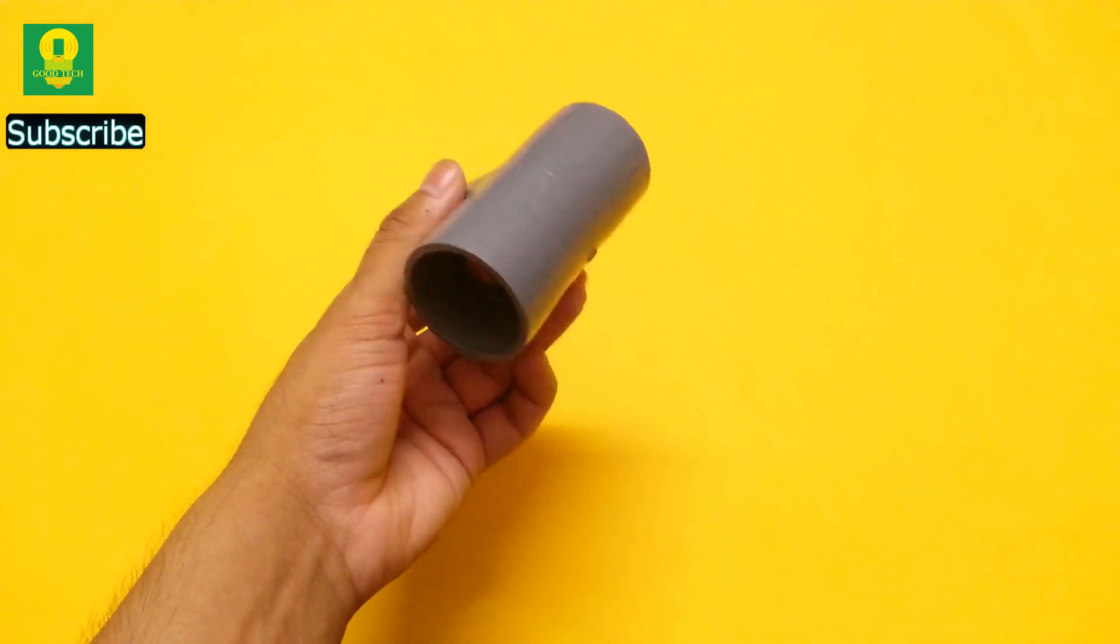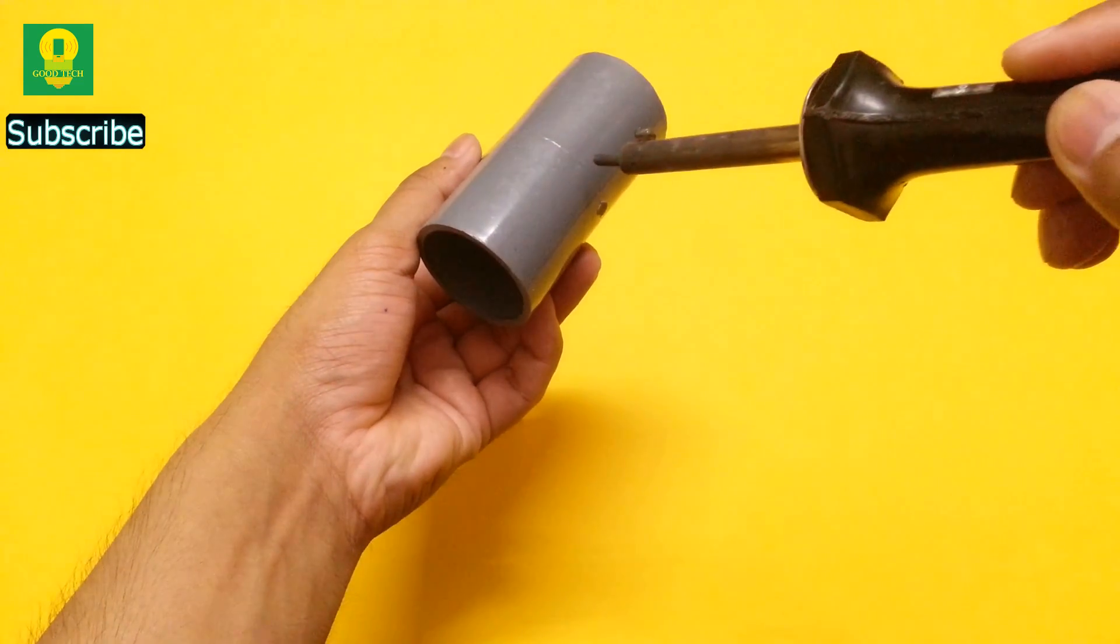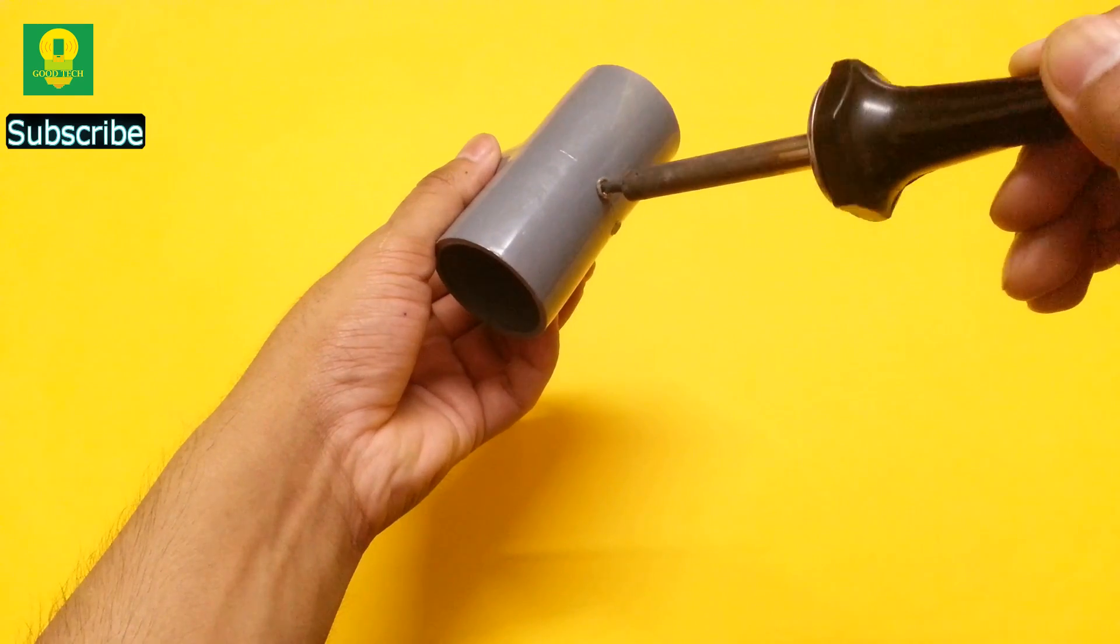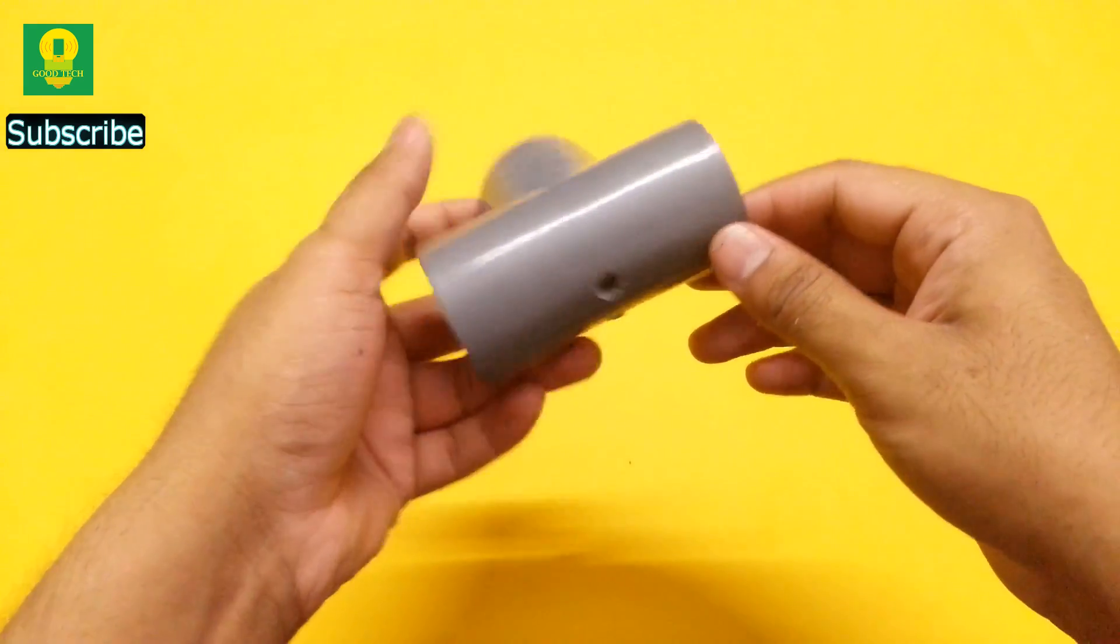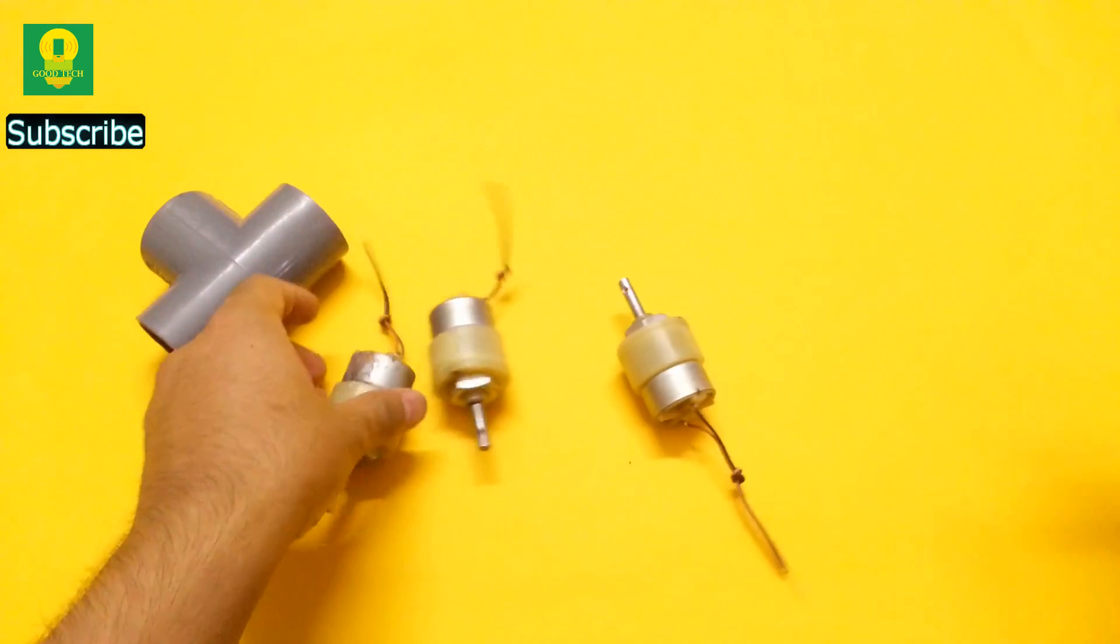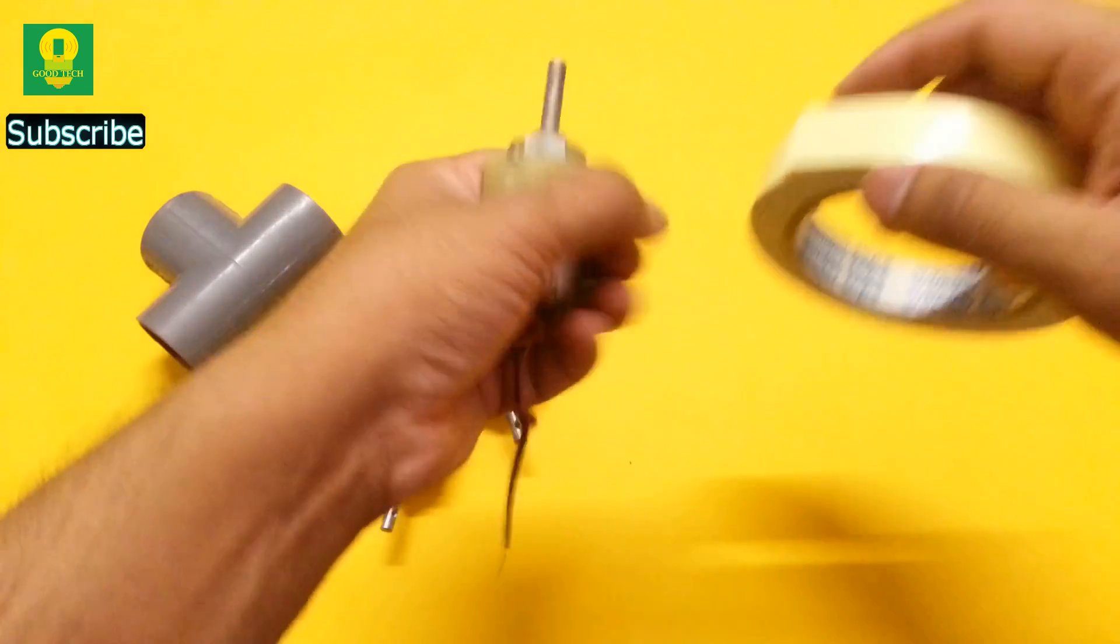To start, take a PVC tee and make a hole at the center. Now take three gear DC motors, apply some double sided tape around them.